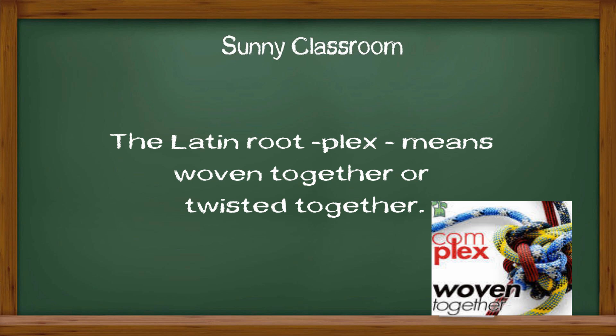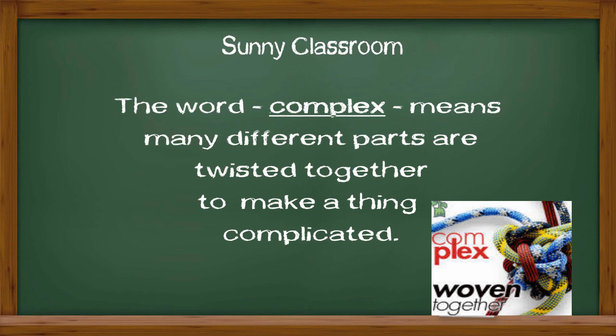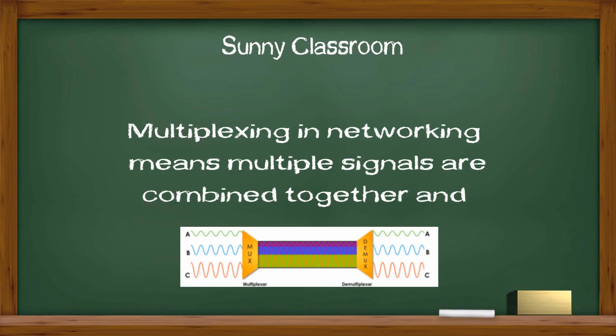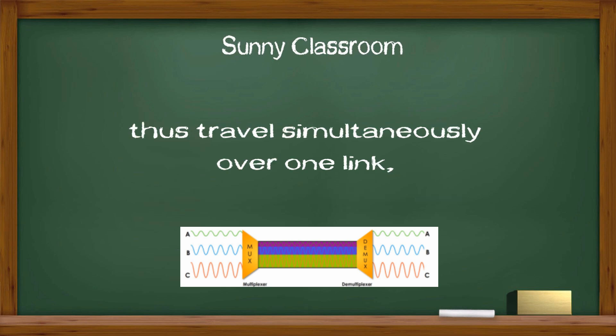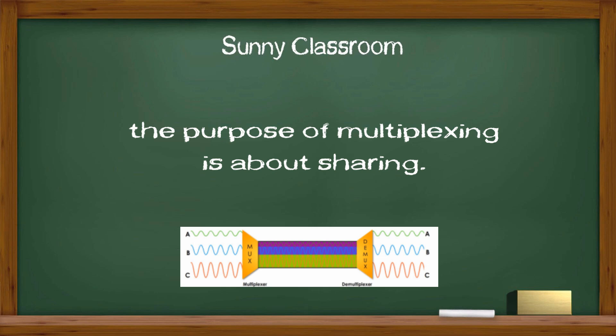The Latin root 'plex' means woven together or twisted together. For example, the word 'complex' means many different parts are twisted together to make a thing complicated. Multiplexing in networking means multiple signals are combined together, and thus travel simultaneously over one link. The purpose of multiplexing is about sharing.